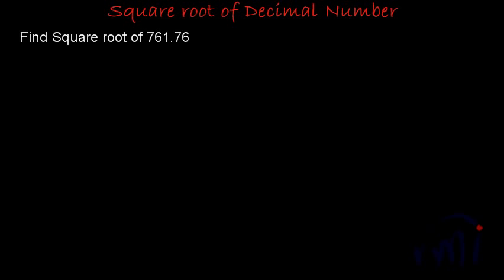We will learn about that as we start solving this problem. So, to find the square root of 761.76, first we will draw these lines and then we do the pairing. And while we do the pairing, we start from this decimal point. We will start from decimal point and go in both the directions. So when we go in the left direction, 61 will make one pair and 7 will be alone in the pair. And if we go towards the right, this 76 will make one pair.